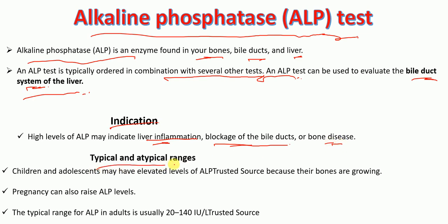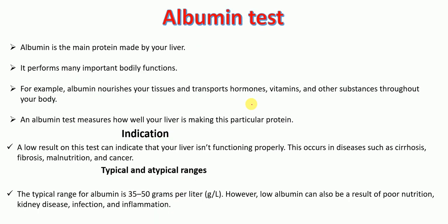Regarding typical and atypical ranges: children and adolescents may have elevated levels of ALP, and pregnancy can also raise ALP levels. The typical range for ALP in adults is usually 20 to 140 international units per liter. In the case of liver damage, the ALP level in the blood increases beyond the standard values, though these values may vary between different labs.